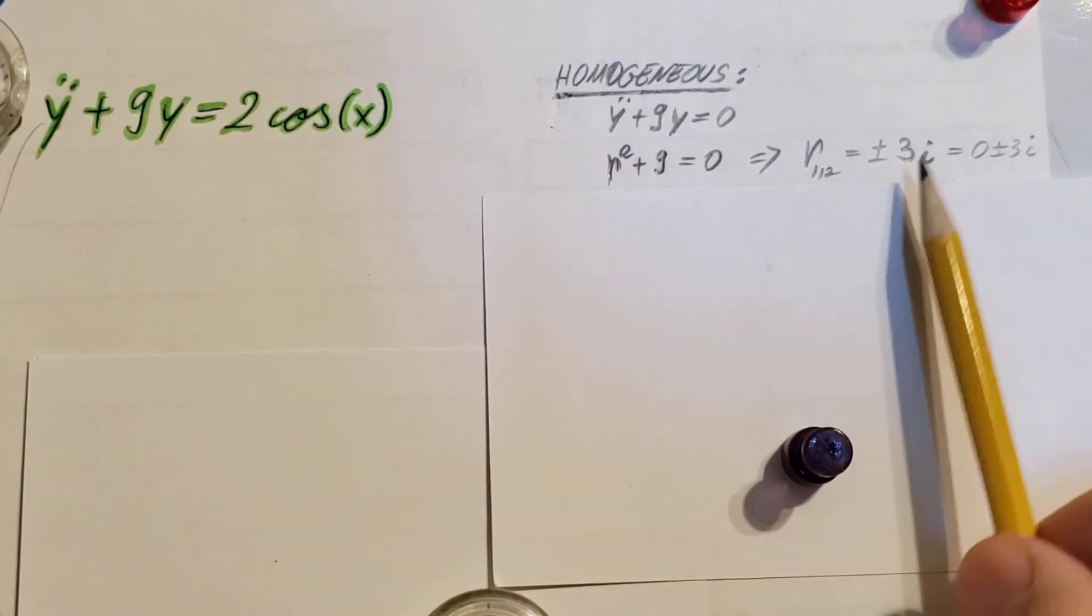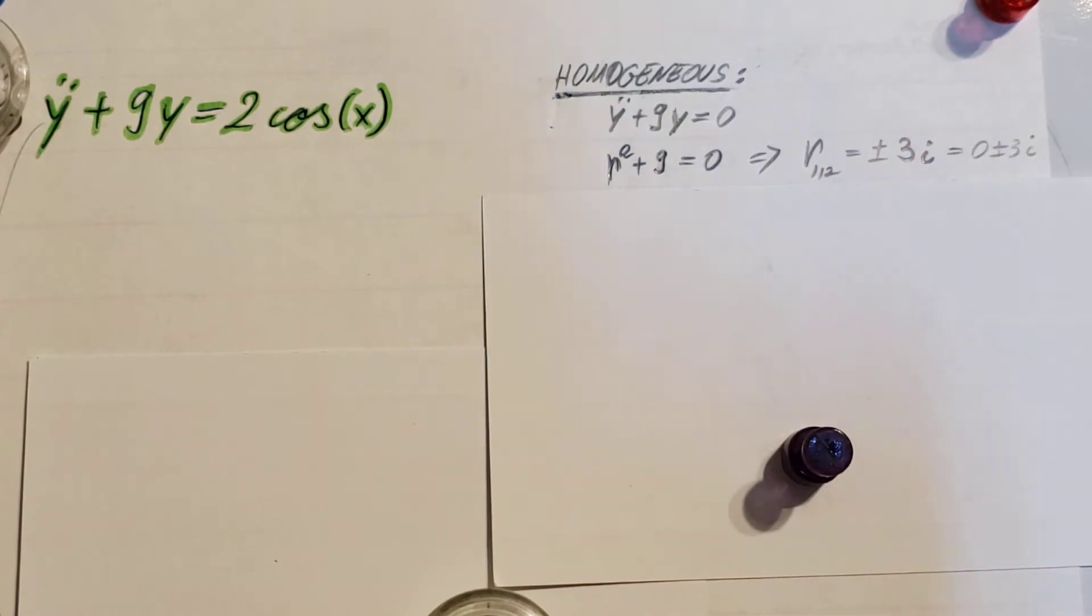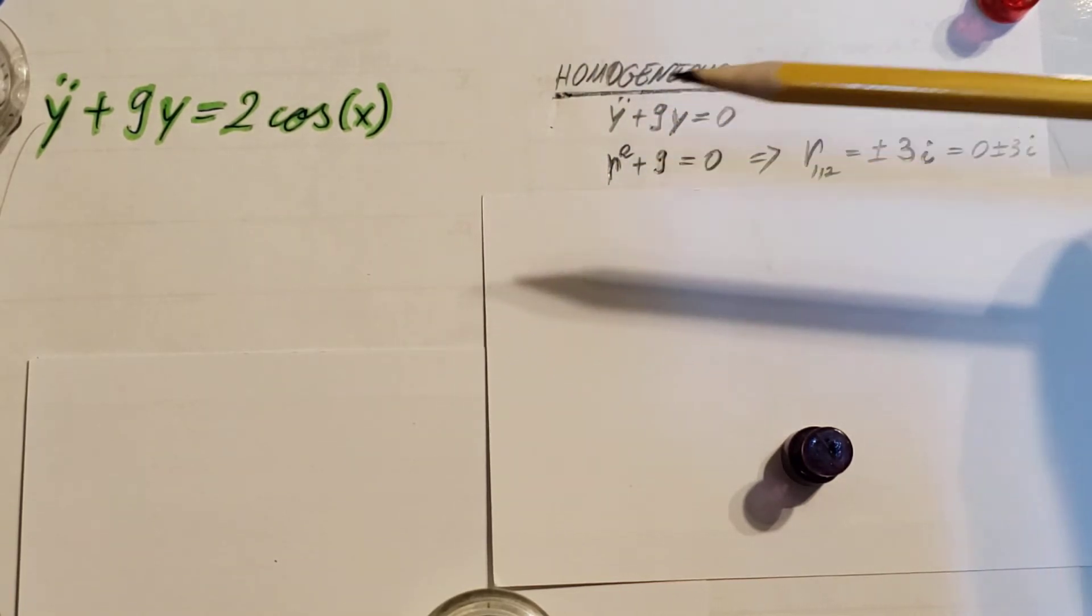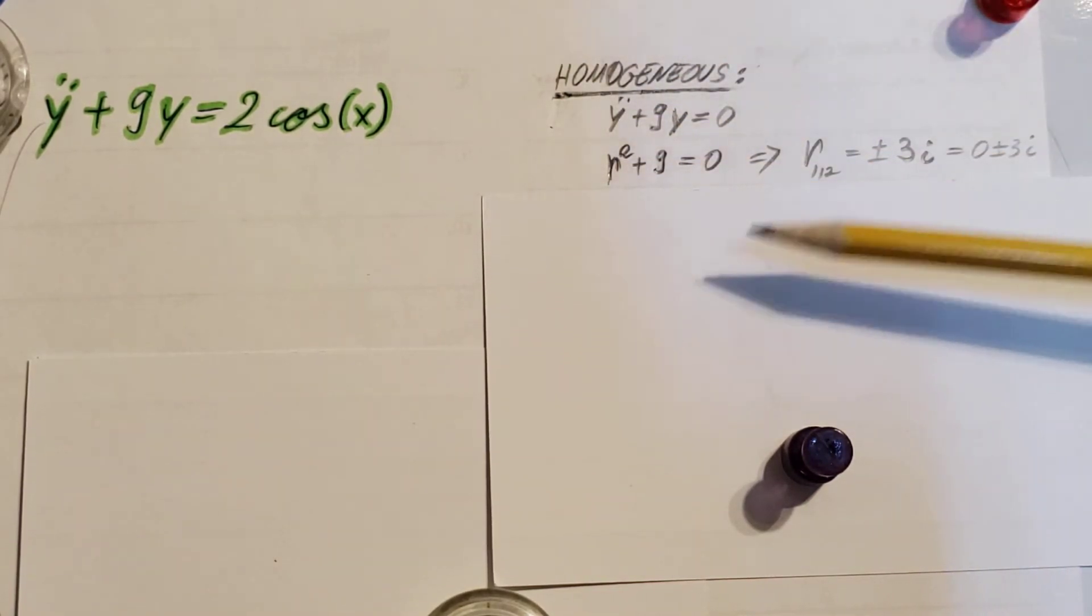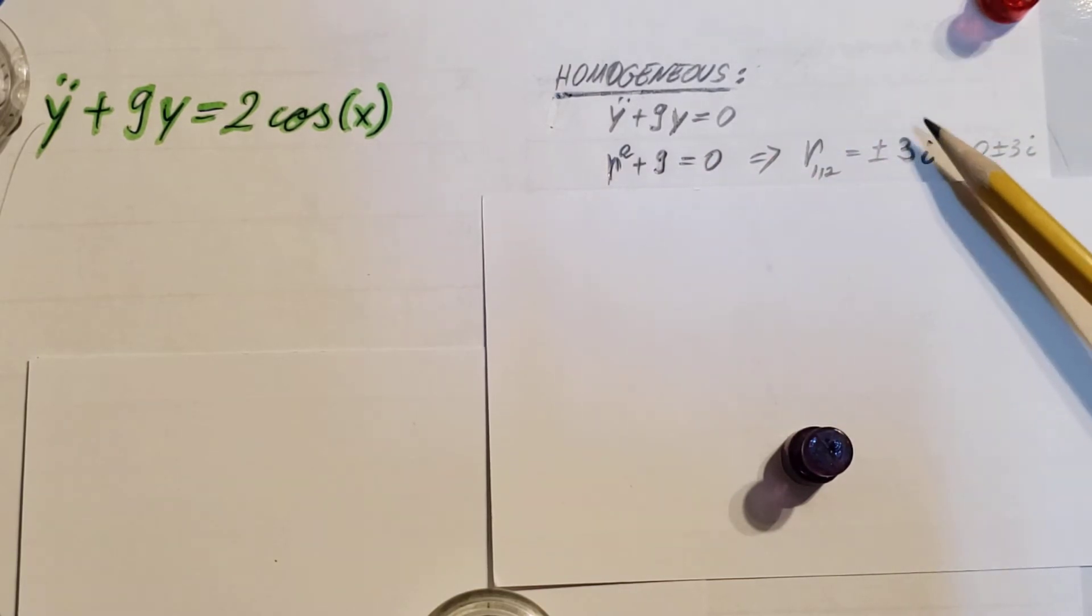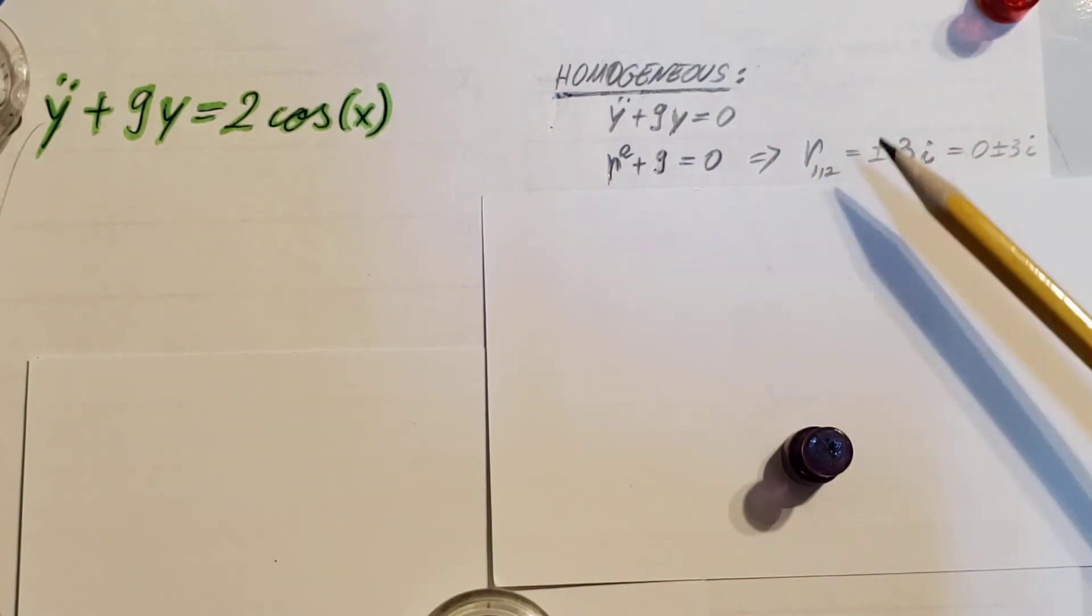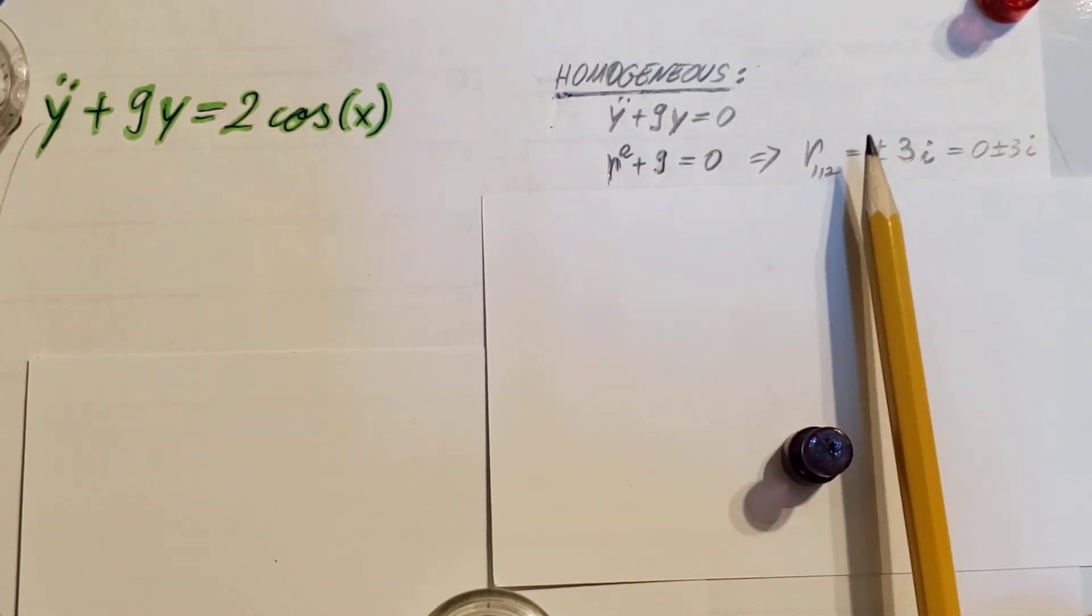We have three scenarios when working with these. First, when we have real roots that are both distinct. Second, where we have real roots but they are both the same. And third, when we are dealing with complex numbers. This is that one when we have complex roots plus minus three i.